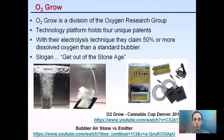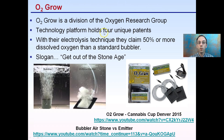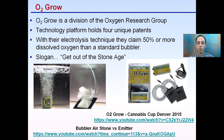The O2 Grow company is a division of Oxygen Research Group, and their technology platform holds four unique patents. With their electrolysis technique, they claim 50% or more dissolved oxygen than a standard bubbler. Their slogan is 'get out of the stone age,' in the sense that their system creates small nanobubbles, actively oxygenating the water much more effectively than a typical air stone. It does require some setup, a cost, and electricity — all things to consider as growers.